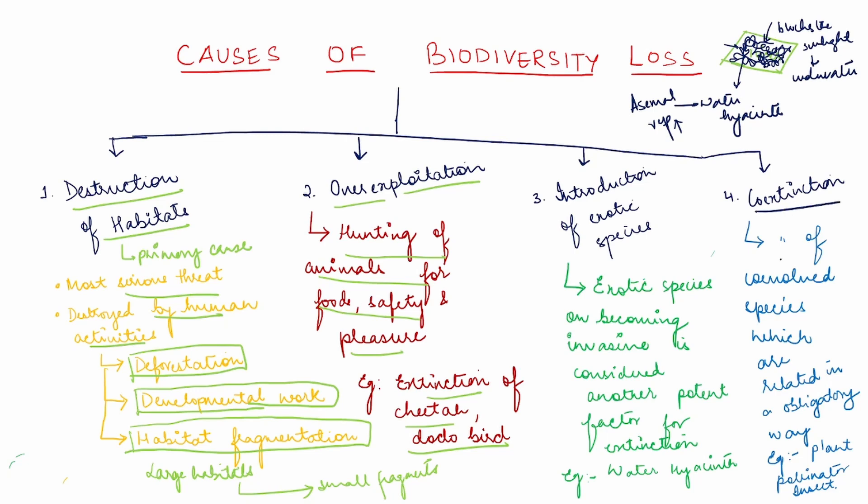Co-extinction refers to the co-extinction of co-evolved species which are related in an obligatory manner. We will see this in our upcoming slides.